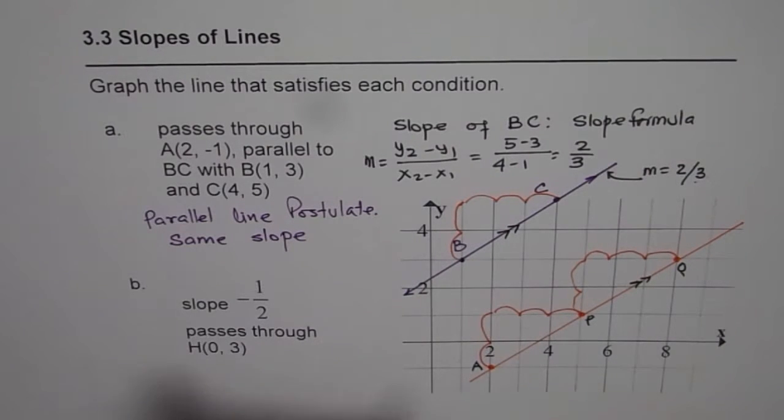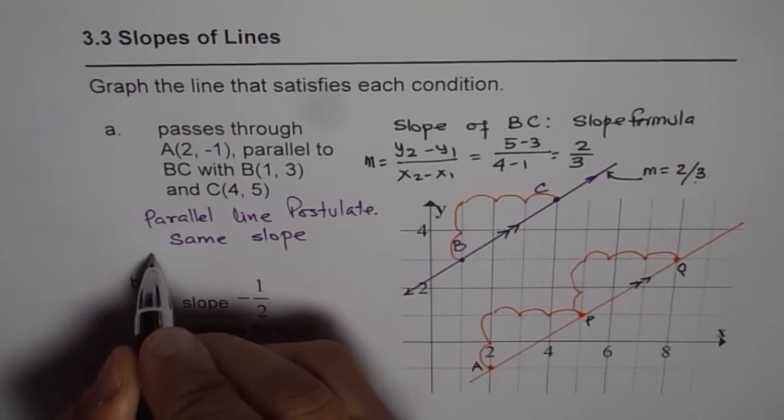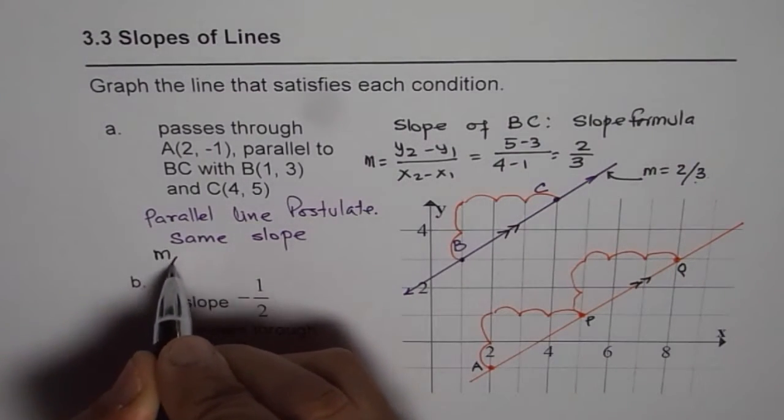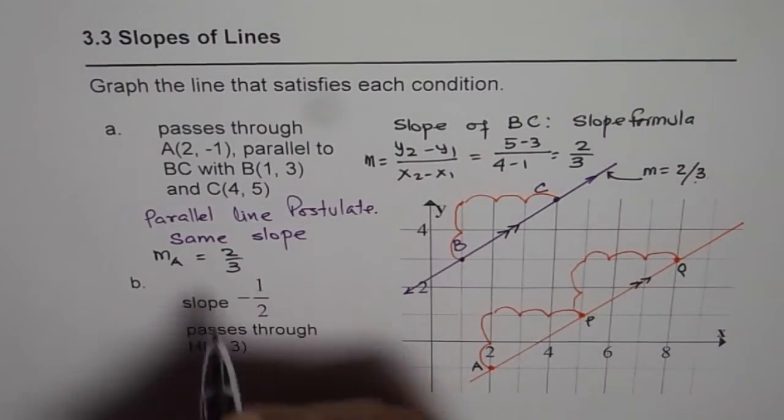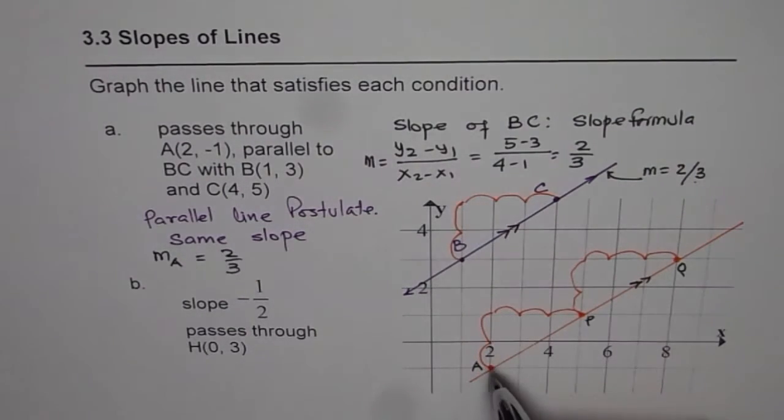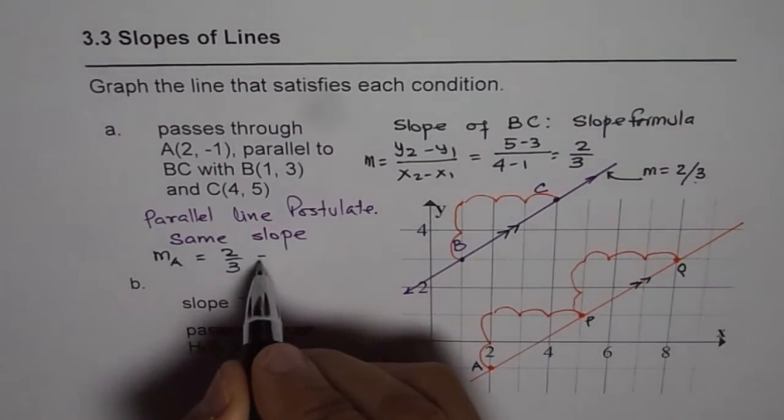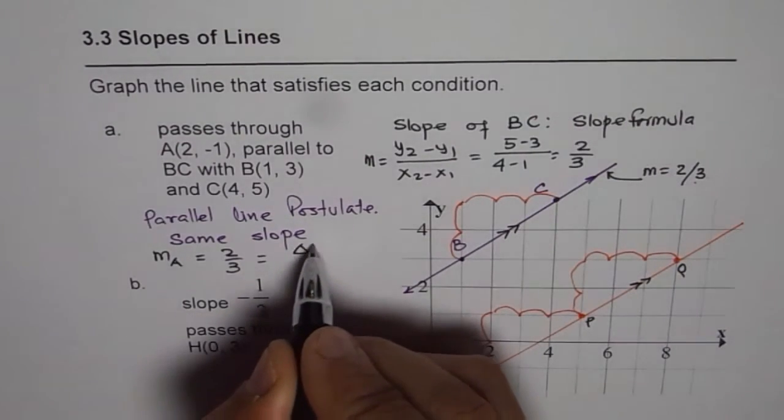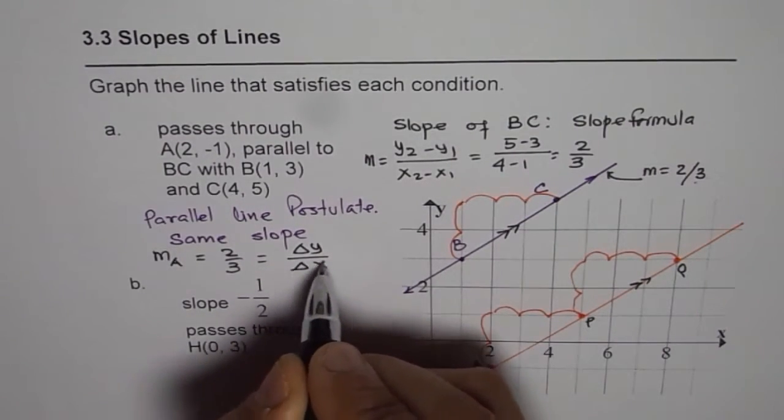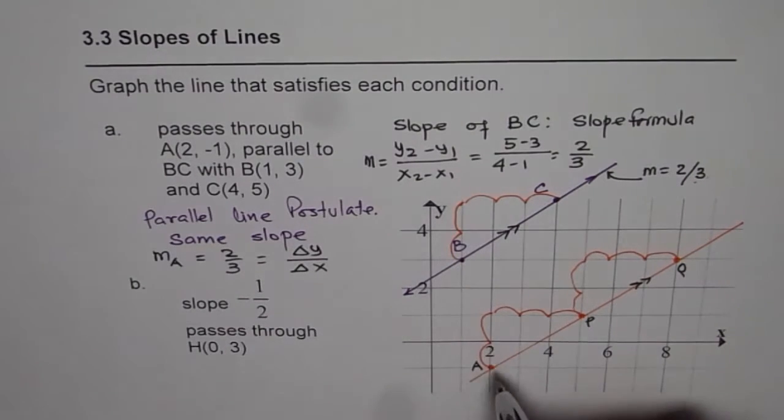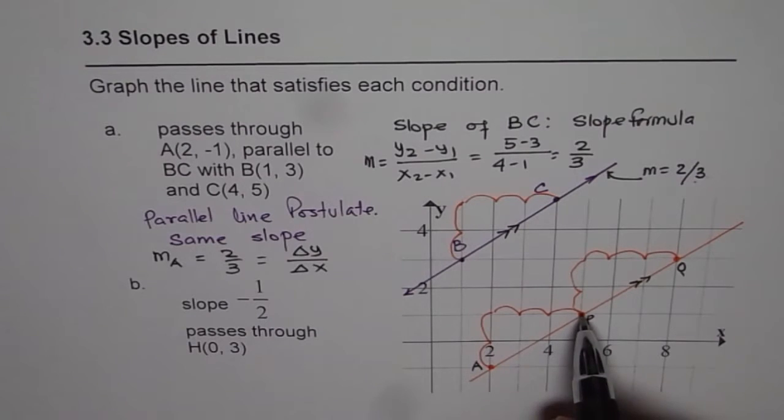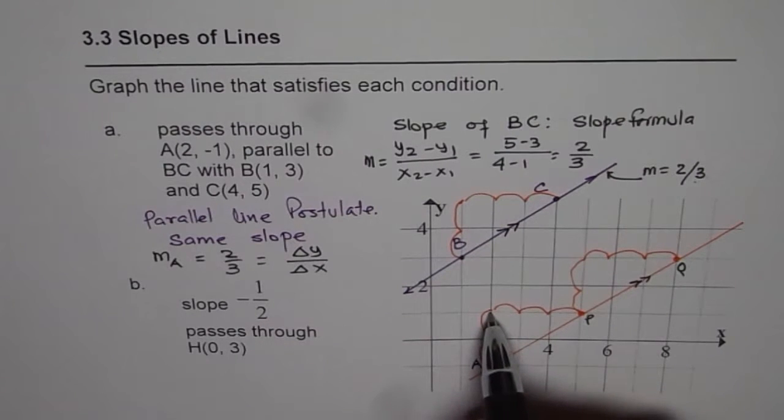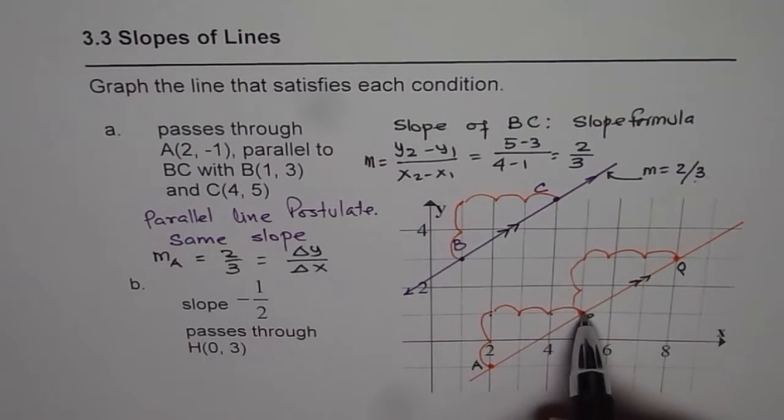We can always sketch a line using rise over run. Slope is change in Y over change in X. Change in Y is 2 and change in X is 3.